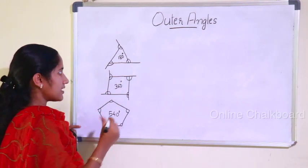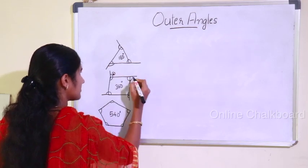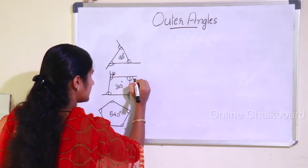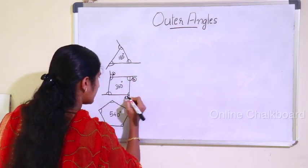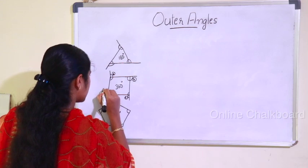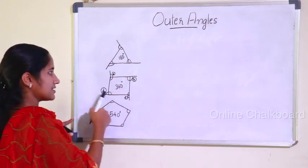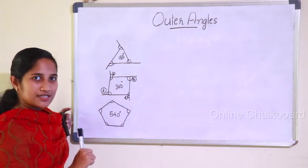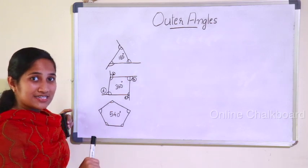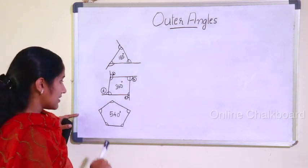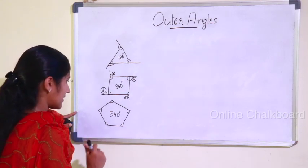Now I'll label these angles a, b, c, and d. We apply labels A, B, C, D between the outer angles of the triangle. Now we consider what the end problem is.